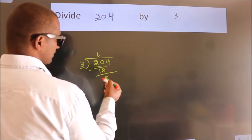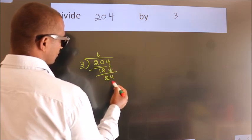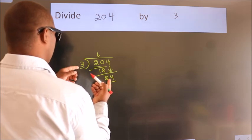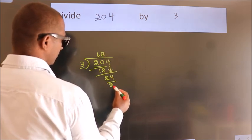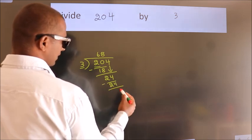After this, bring down the next number. So 4 comes down, making 24. When do we get 24 in the 3 table? 3 times 8 is 24. Now we subtract and get 0.